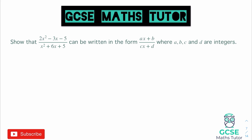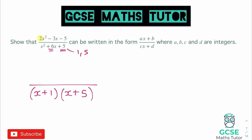You can pick the easier one to factorise first, but you do need to be comfortable factorising a quadratic where the coefficient of x squared is bigger than 1, which we have on the numerator — a coefficient of 2. I'm going to start by factorising the bottom because it makes the harder factorisation slightly easier. So factorising the denominator gives us a double bracket: we're looking for two numbers that multiply to 5 and add to 6, which is 1 and 5, giving us (x+1)(x+5).